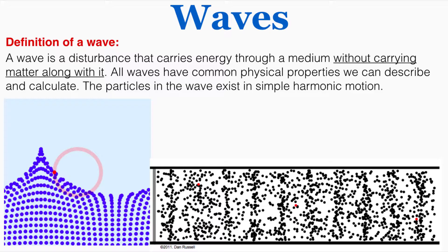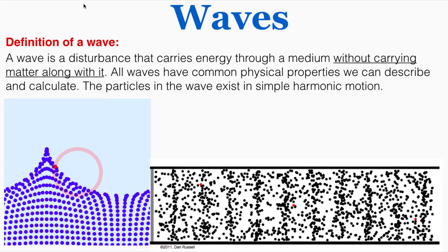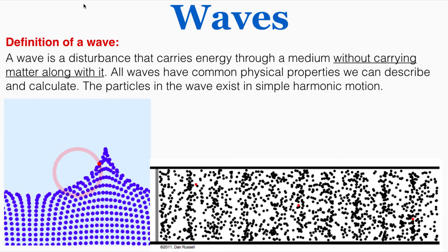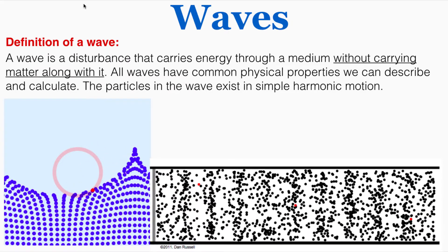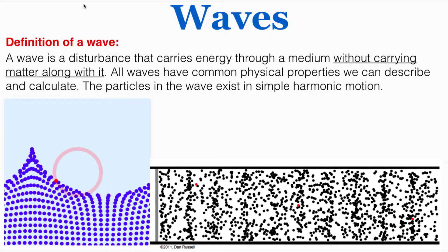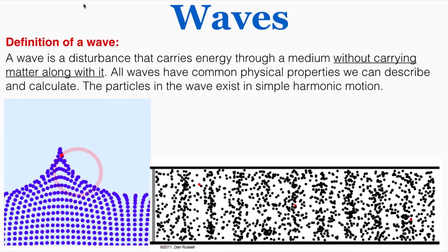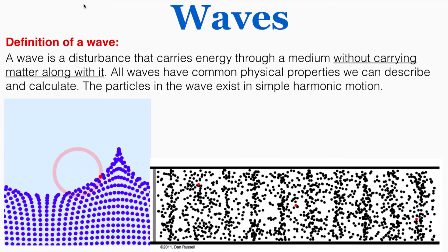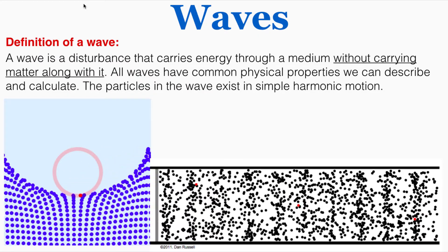The particles in the wave exist in simple harmonic motion. I'm going to play these two animations and have you observe what's happening as the wave moves through the matter. Notice that these two animations show you every particle in the medium that the wave is moving through. So you can see that even though the wave is moving through the medium, the particles themselves are being pushed back and forth by the wave, but they're not really being carried along with it.